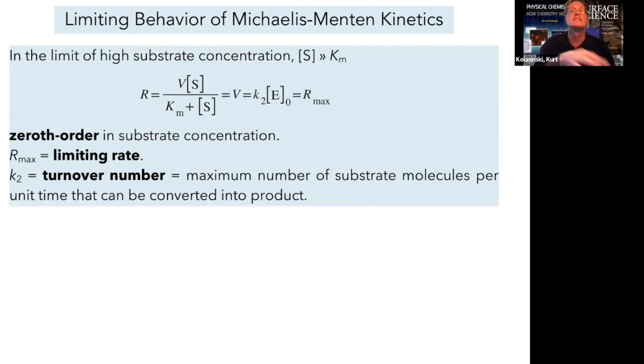Now let's look at the limiting behavior of the Michaelis-Menten equation. In the limit of high substrate concentration, where S is large compared to Km, then S is large compared to Km, we can forget about that, divide through, oh wait a second, then the rate is just equal to V, that's K2 E naught, or sometimes that's also called R max, the maximum or limiting rate. Notice that in this limit, the kinetics are zeroth order in substrate concentration, as we were expecting from our previous observations.